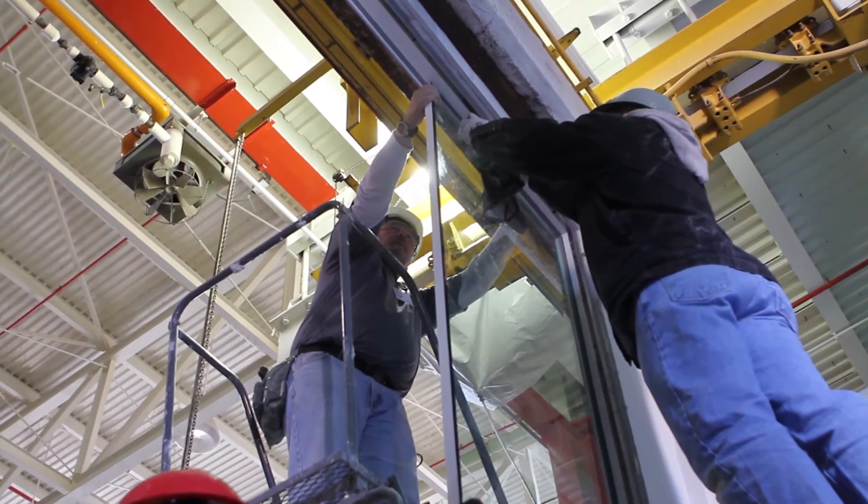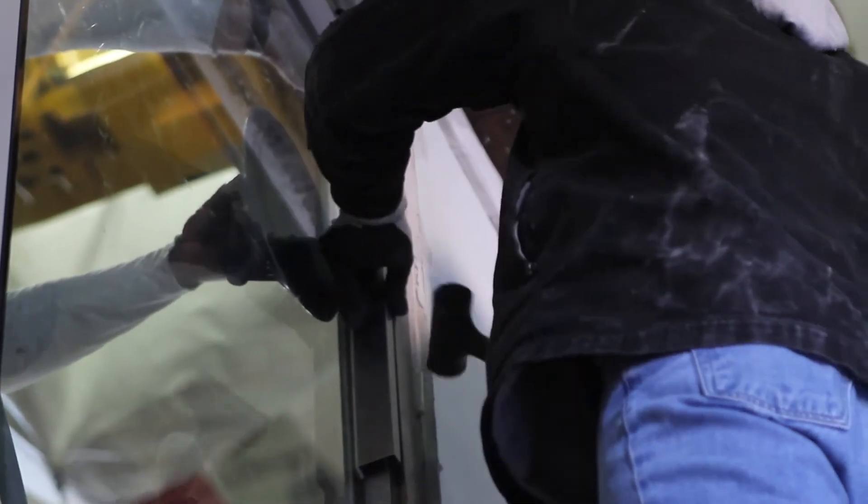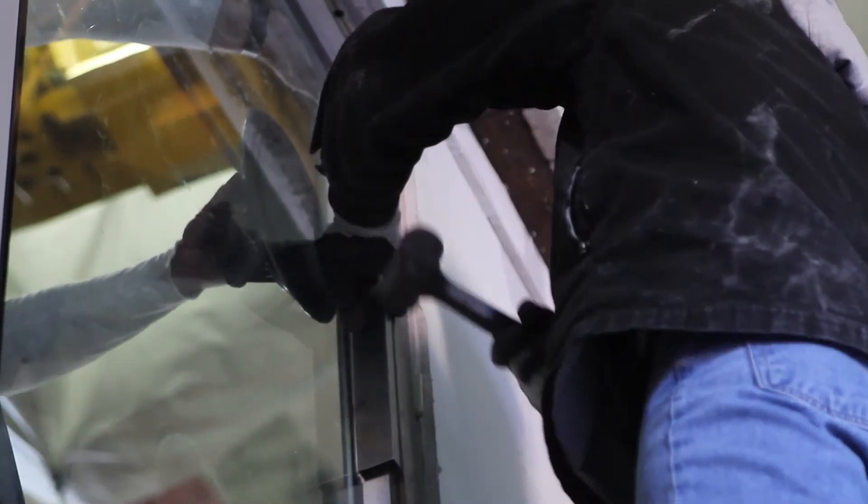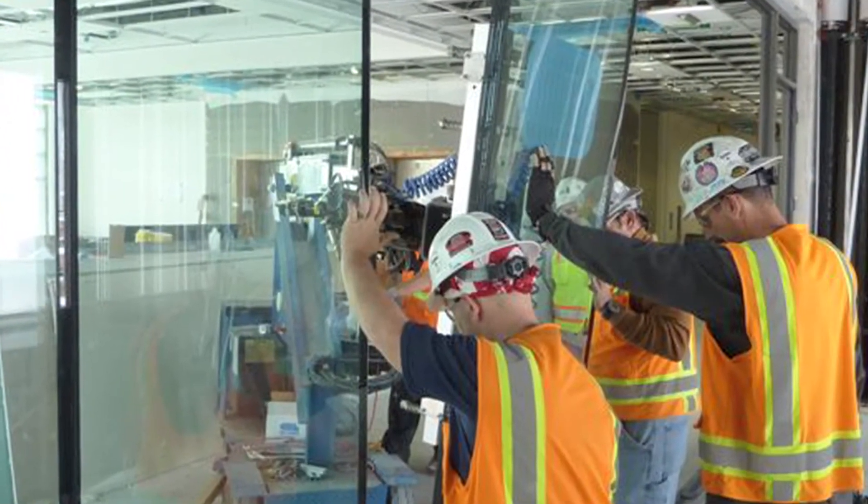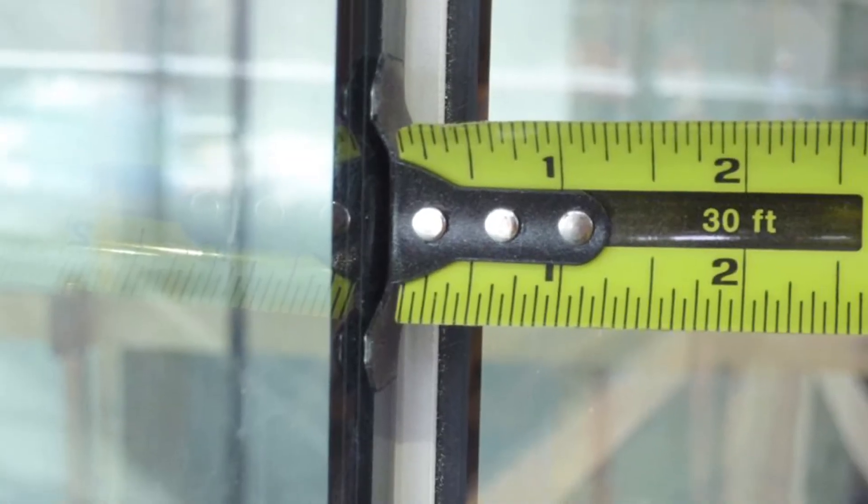Secure the pane temporarily with short glass beads. Repeat these steps for the remaining panes of glass, ensuring that all panes are in proper alignment. Also ensure that all intumescent tape surfaces at the butt joints are in complete contact.